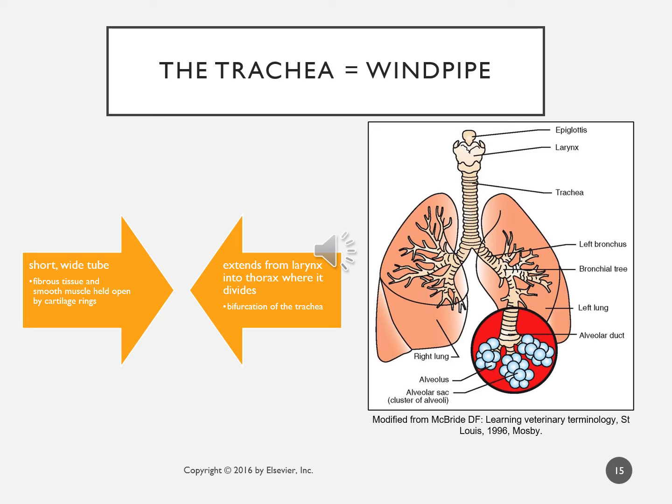The trachea, or windpipe, is a wide short tube with fibrous tissue and smooth muscle held open by cartilage rings. You should always be able to feel the trachea but not the esophagus unless there is a tube in it — then you feel two tubes. The cartilaginous rings extend from the larynx into the thorax where the trachea bifurcates into the left and right bronchi.